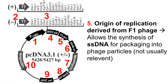Next, we have the F1 origin — the origin of replication derived from the F1 bacteriophage. This allows the synthesis of single-stranded DNA from the vector, used for packaging into phage particles. Basically, you take your plasmid, transform it into bacteria, and then infect the bacteria with different helper phages to start single-stranded DNA synthesis. Again, this is more relevant for phage studies and is not really relevant for mammalian cell transfections, so we can pretty much ignore this origin almost all of the time.